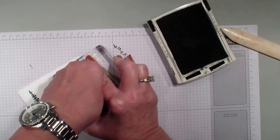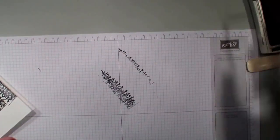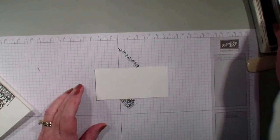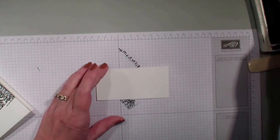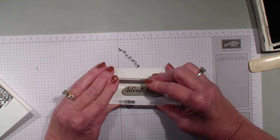Next, what I'm going to do is bring in a piece of Whisper White cardstock. This measures 2 inches by 4 1/4 and I'm going to take the Silent Night from that stamp set and just stamp it towards the bottom of that piece of paper.